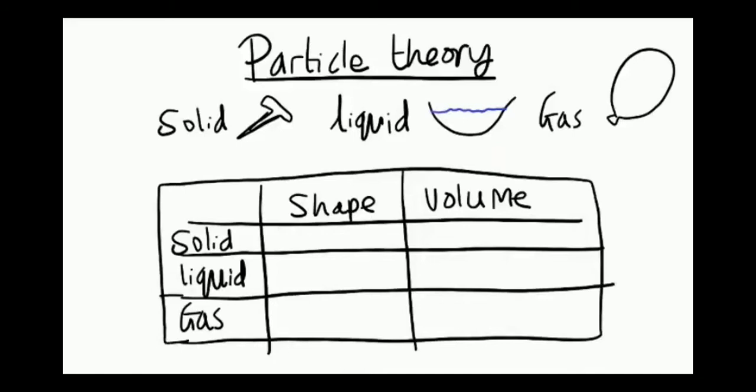So starting with solids like a nail, can it change its shape? Well the answer is no. It has a fixed shape. It doesn't change its shape unless we apply a big force to it. How about the volume? It's also fixed. We can't change the volume of a solid.